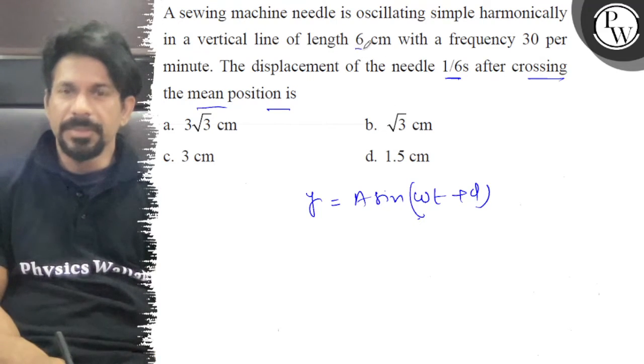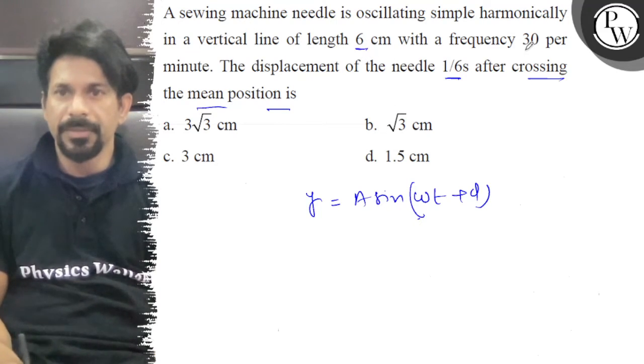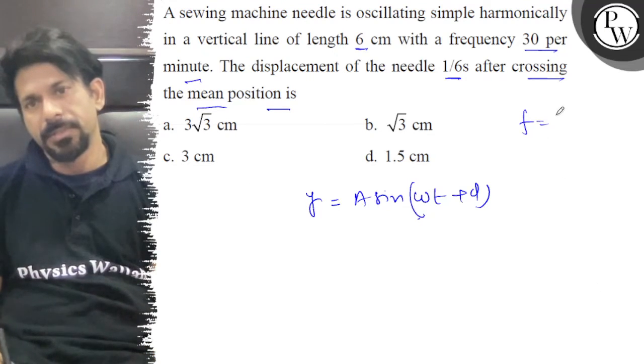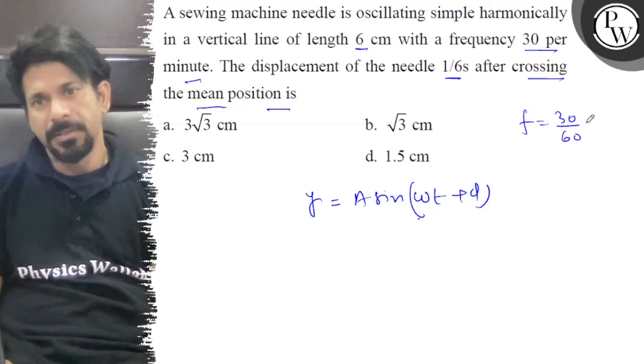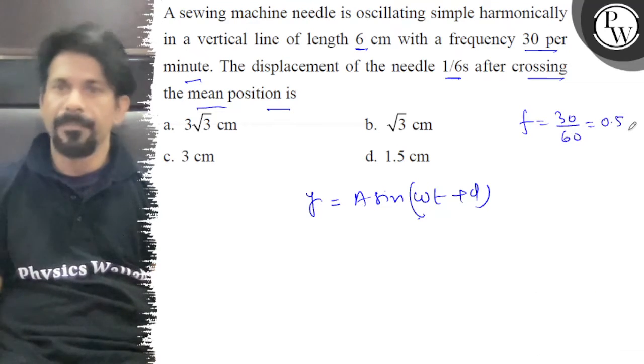Length 6 cm with a frequency is 30 per minute. So, the frequency is 30 by 60 is equal to 0.5 per second.